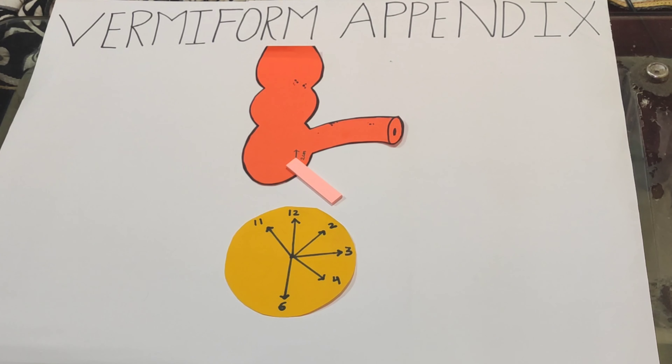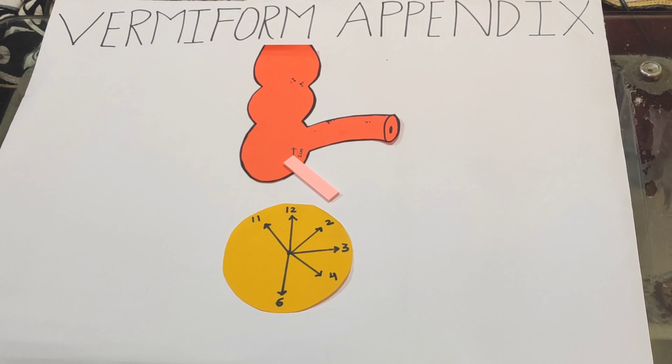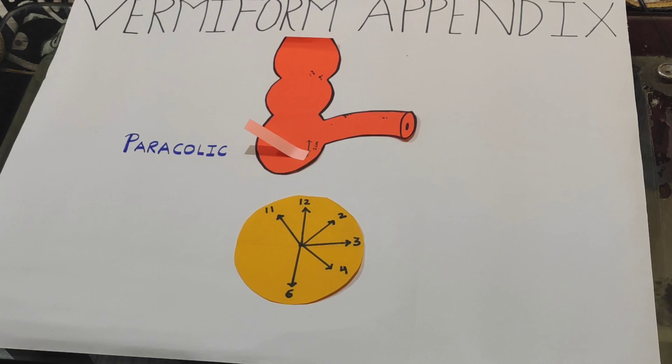Its length varies from 2 to 20 cm, with an average length of 9 cm. The tip of the appendix may point in any direction, so based on the direction of the tip, there are 6 positions of the appendix.